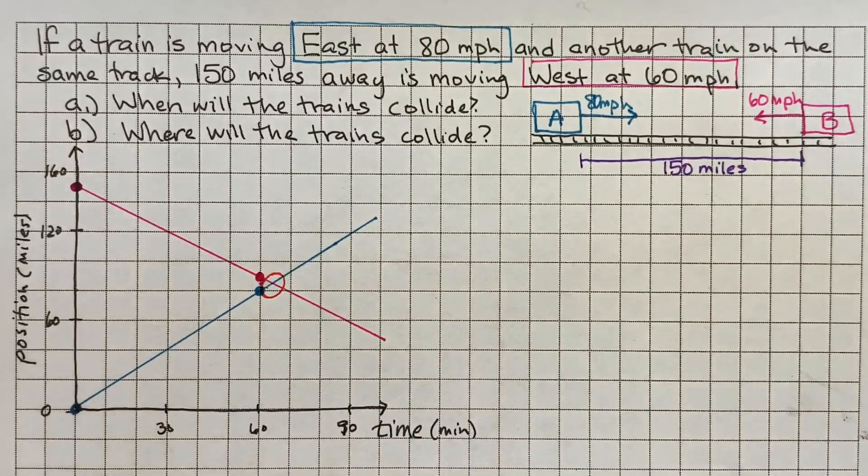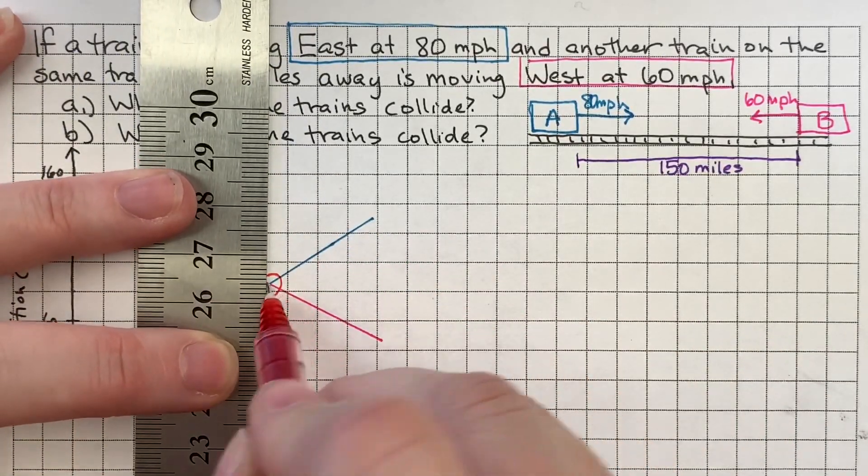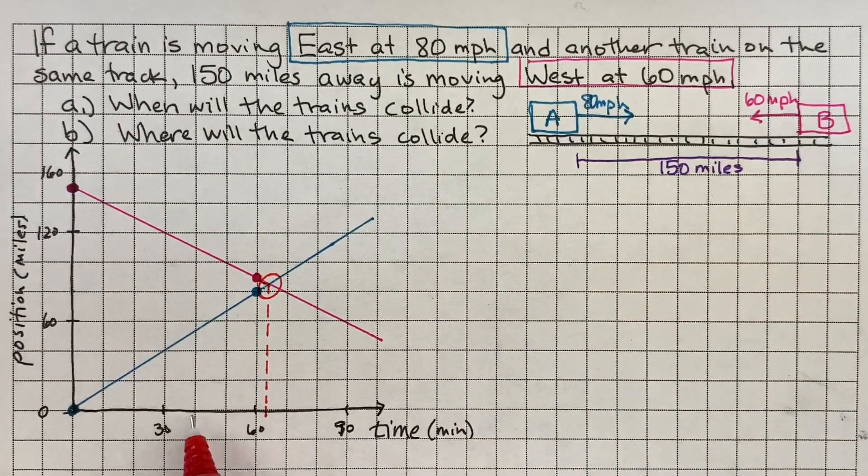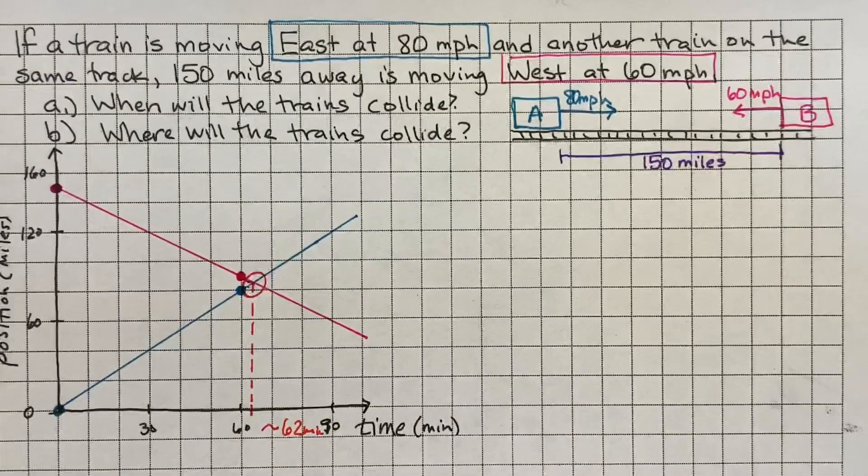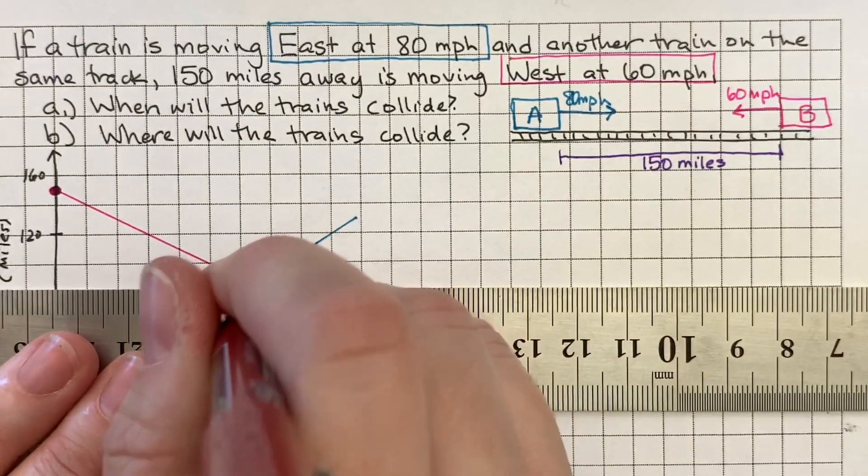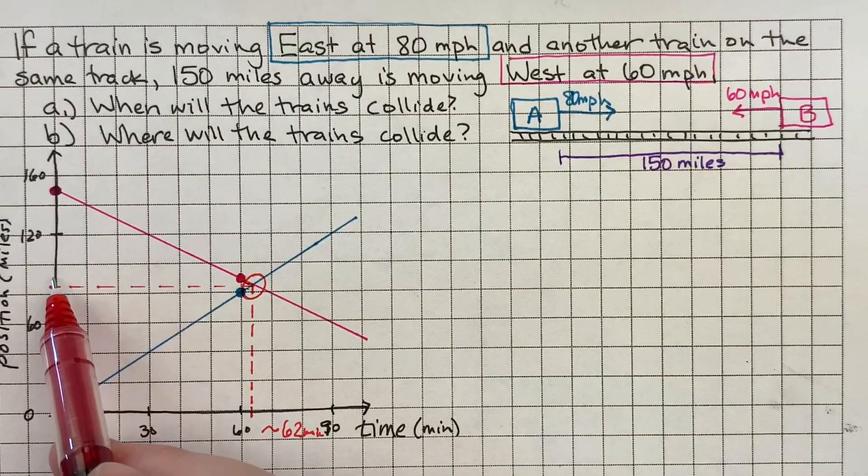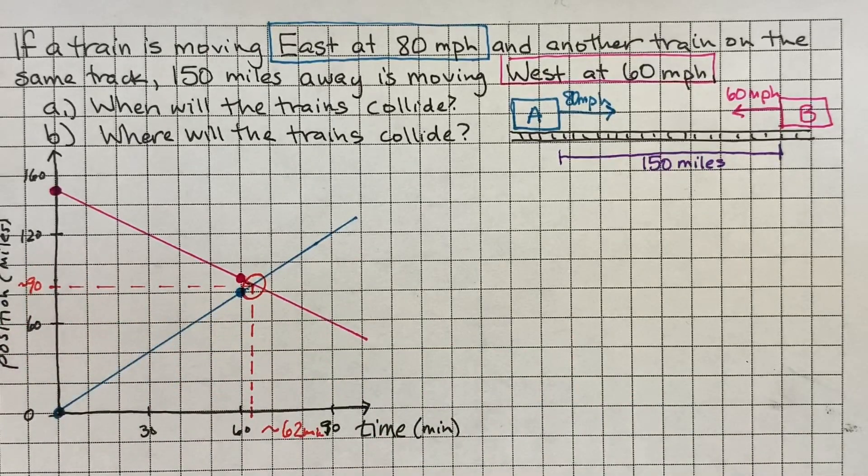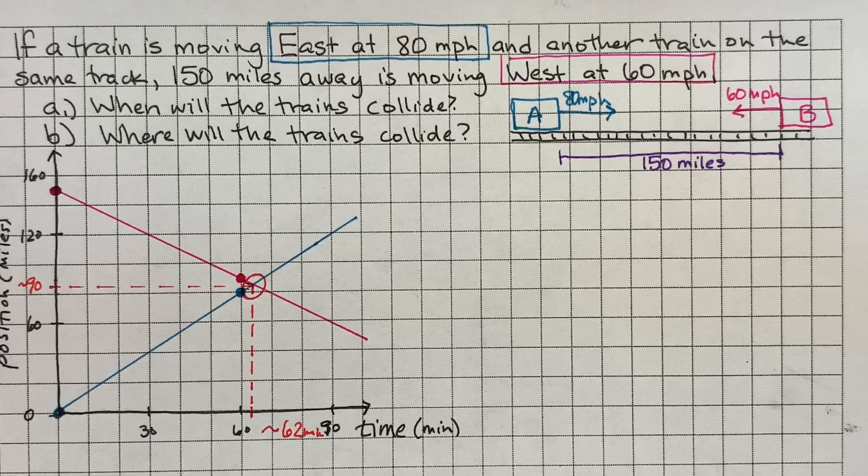But what we're going to see now is where those two meet, which is going to be the red zone of death. That's going to be where they're actually not going to keep going anymore because they're going to crash. So I'm going to bring this point down to my time axis. So that's about 62 minutes. So just over an hour. And then if I come over here, about 90 miles from where train A started. So that gives us an idea when we do our algebra of what our answers should approximately look like.